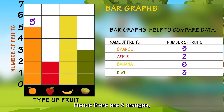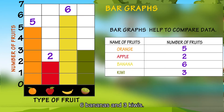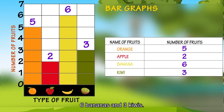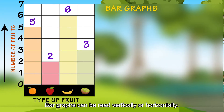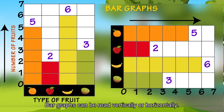Hence there are five oranges, two apples, six bananas, and three kiwis. Bar graphs can be read vertically or horizontally.